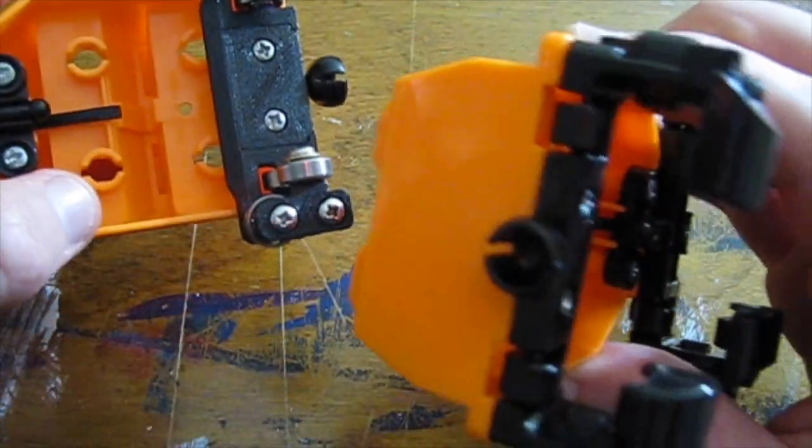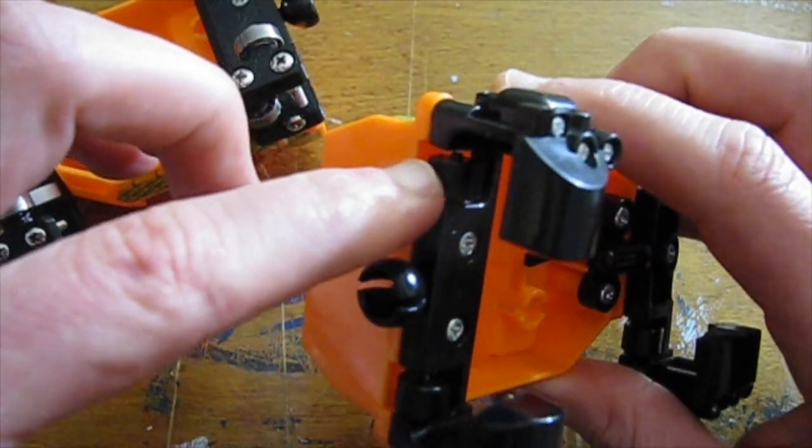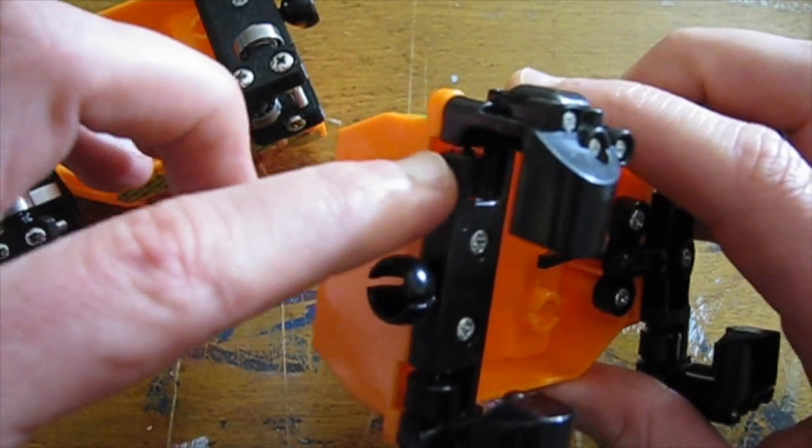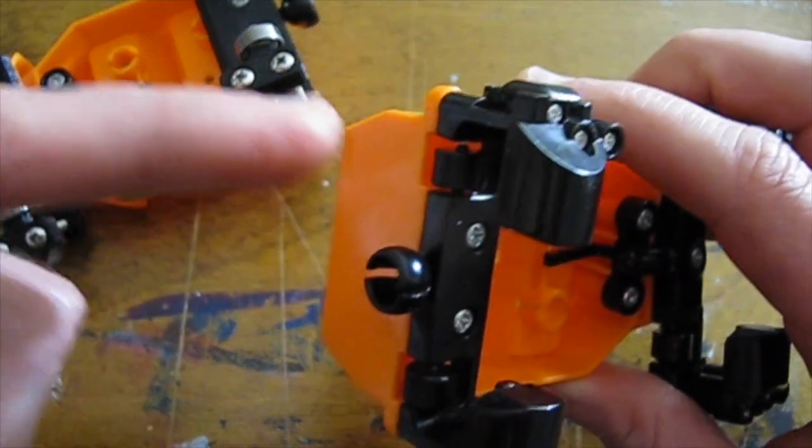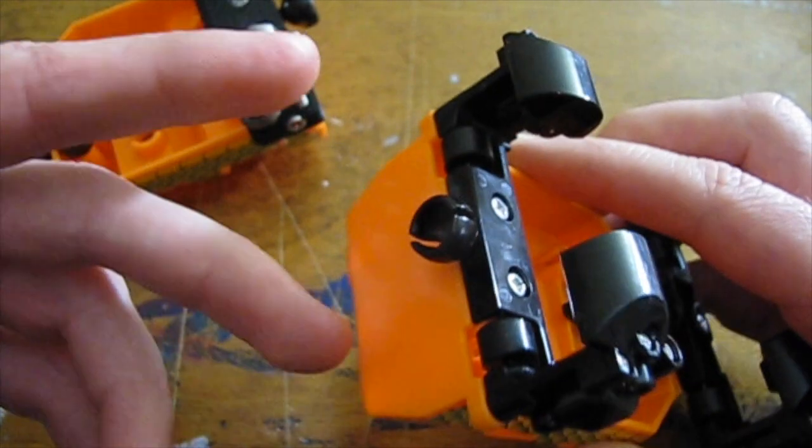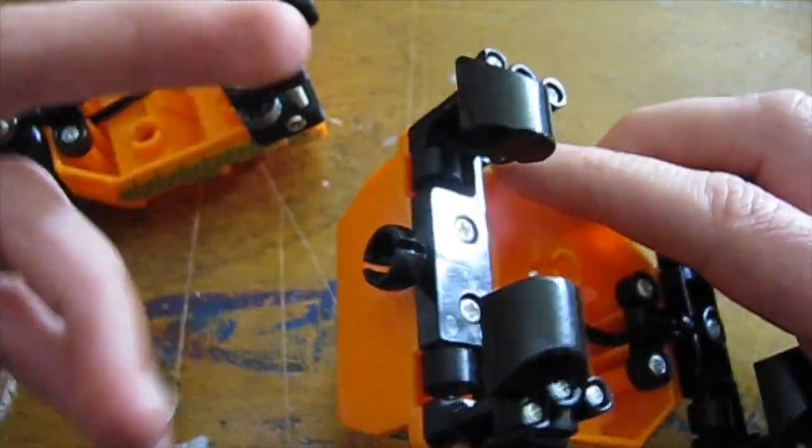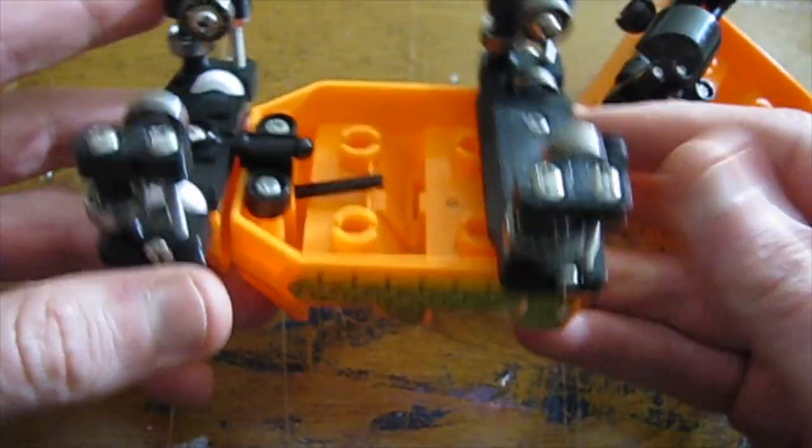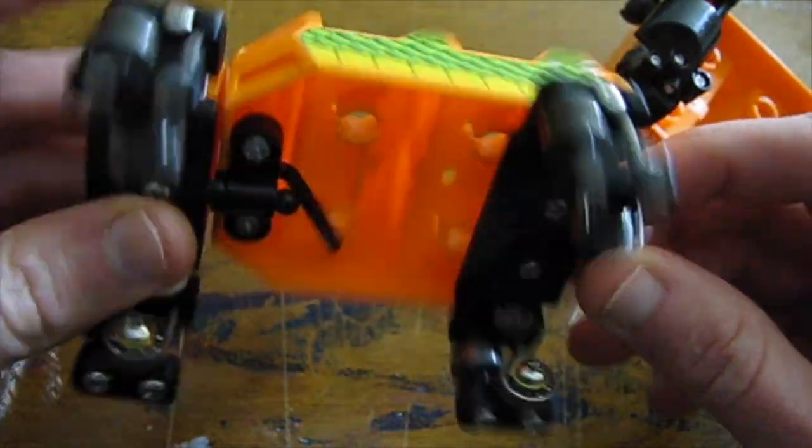One downside that I see is that dust and whatnot can collect more in these bearings. There's not huge spaces between the axle and wheels on the stock ones, so those might be better for outdoor applications or different things where elements just affect your wheels more. For me it hasn't really affected much.